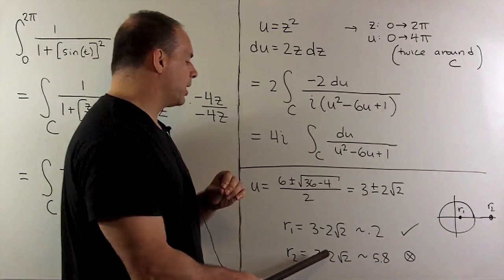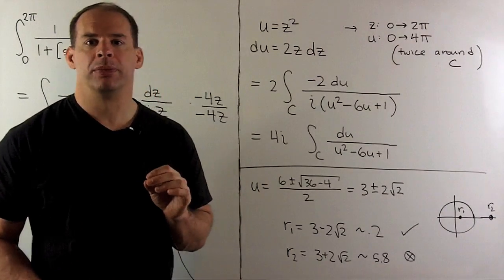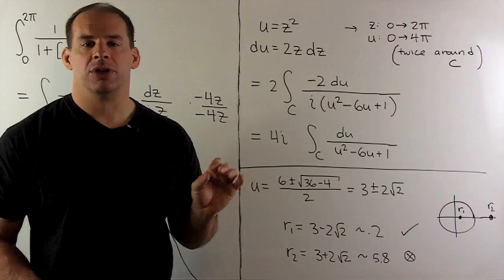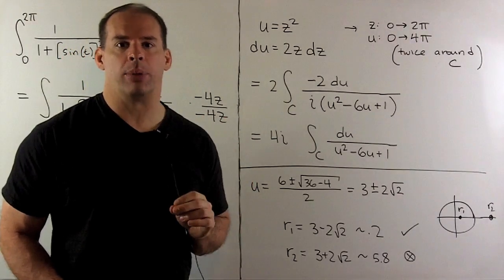For R2, 3 plus 2 times square root of 2. It's roughly 5.8. So, that's outside the unit circle, and we won't need to check that pole.